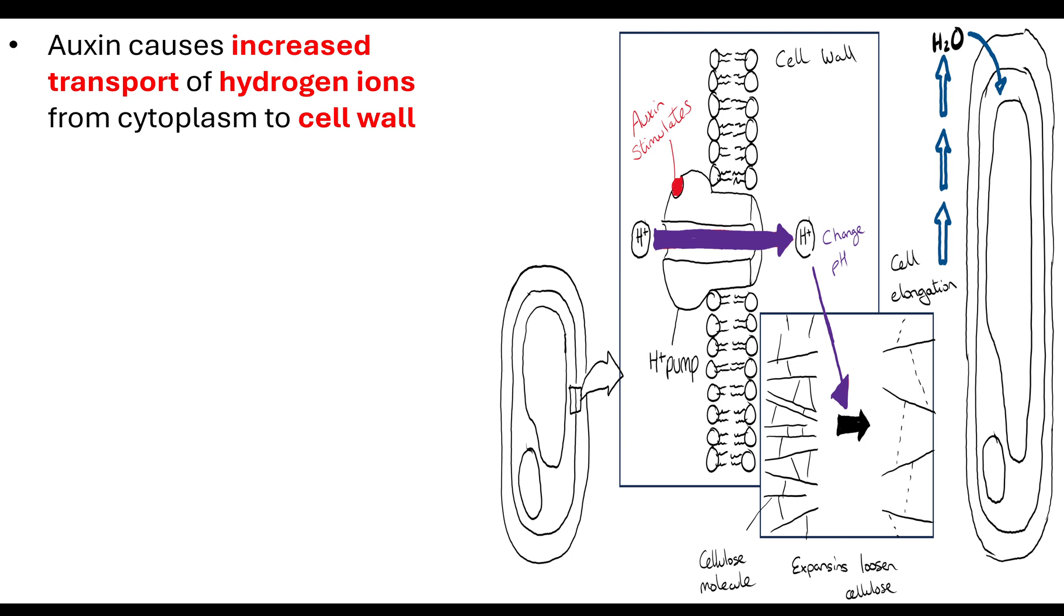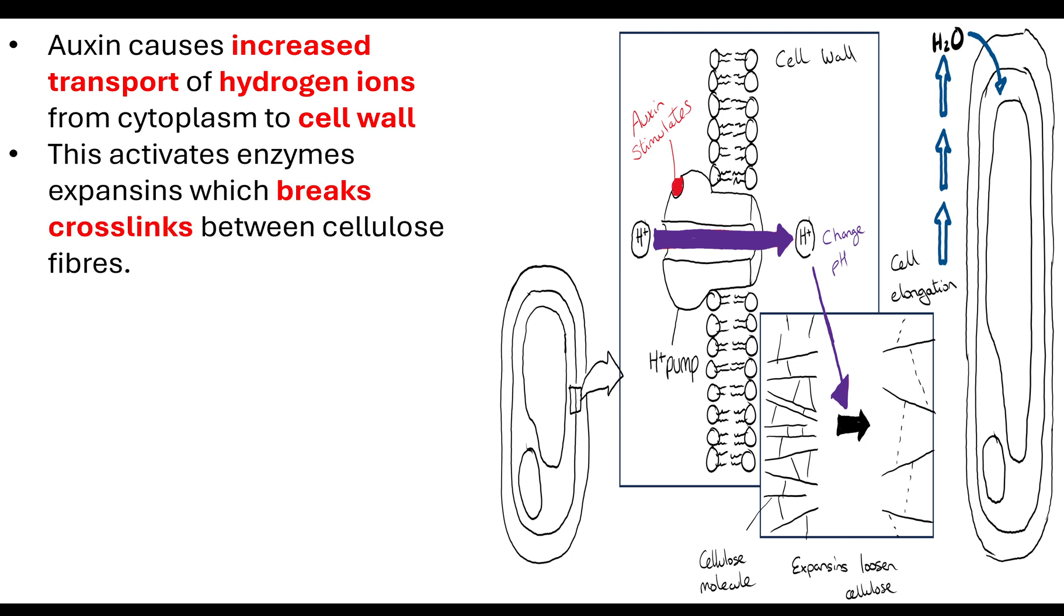This transport of hydrogen ions affects the pH. By changing the pH inside the cell wall, that activates enzymes called expansins. Taking us back to module 2 biological molecules, we need to remember that cellulose molecules build up our cell wall. The cellulose fibers create crosslinks because of the inversion of their glucose molecules, their beta glucose molecules. The enzyme expansin breaks these crosslinks between cellulose fibers.